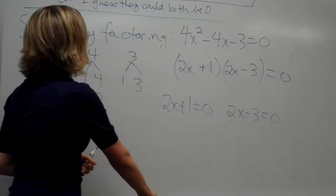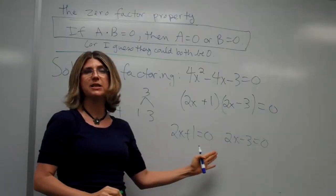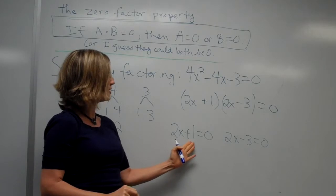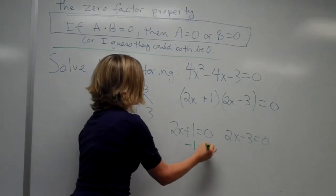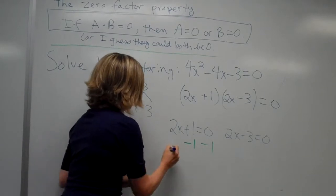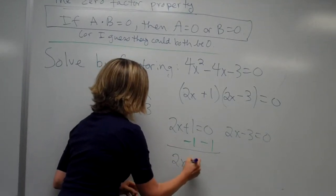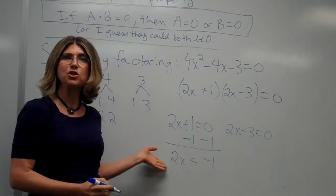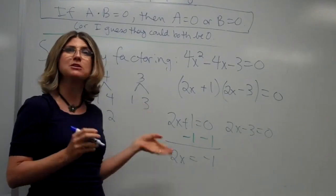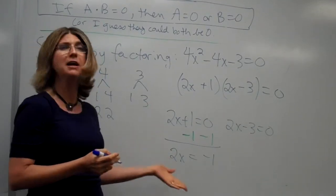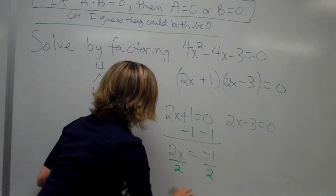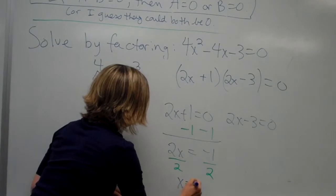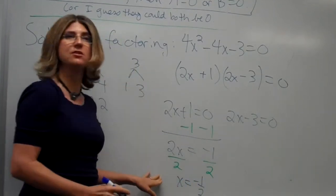So the first thing we want to do for 2x plus 1 is zero is, since we're adding 1 to the x, we want to undo adding 1, and we want to subtract 1. Of course, we do that to both sides, and that gives us 2x is minus 1. Then, because we're multiplying 2 by the x, we want to undo multiplying by 2. So we divide by 2. Of course, in math, we do that on both sides. So that gives us x is equal to minus 1 half. That's one solution.